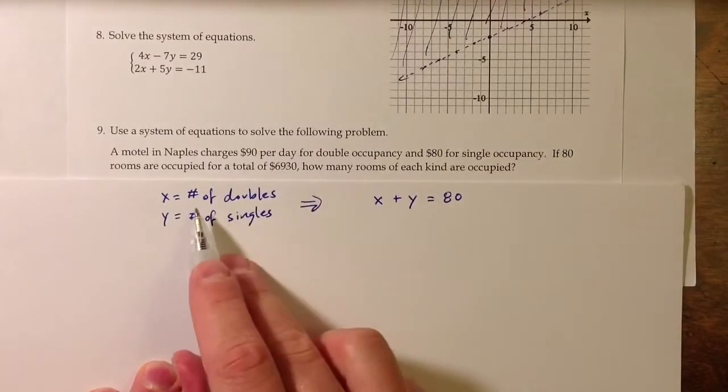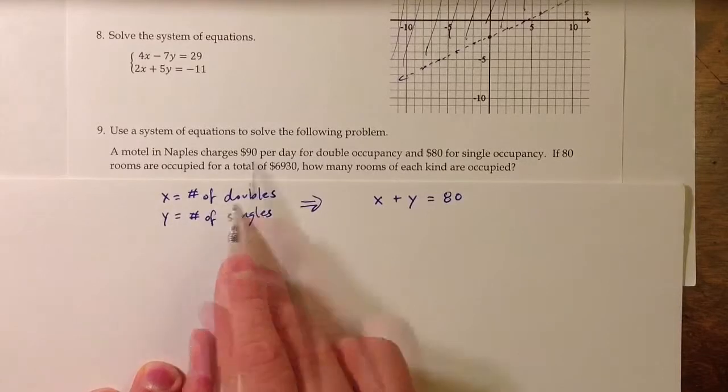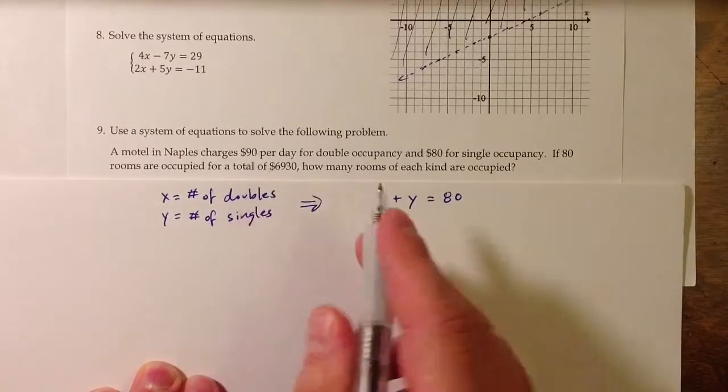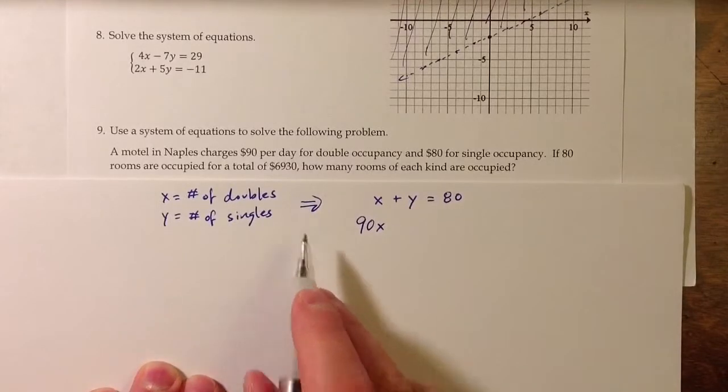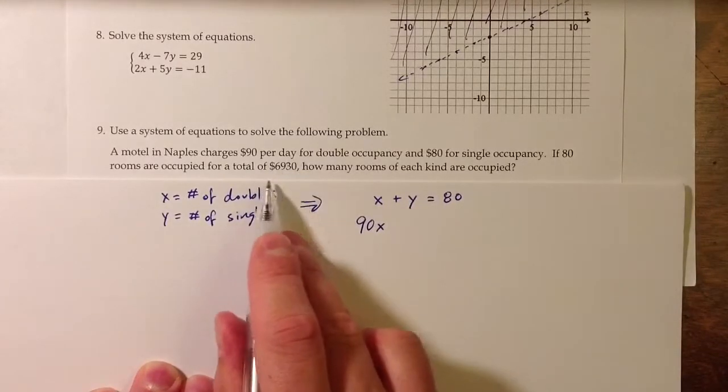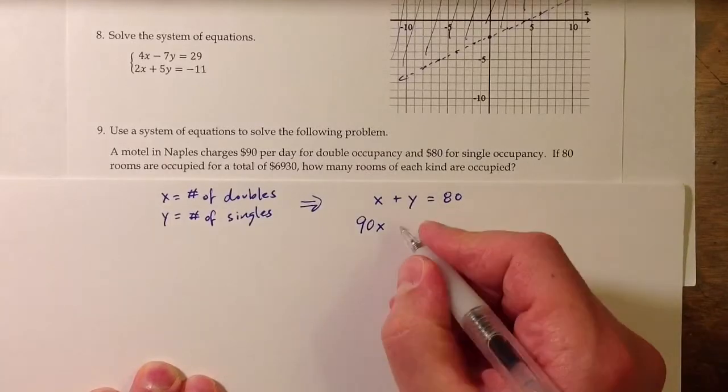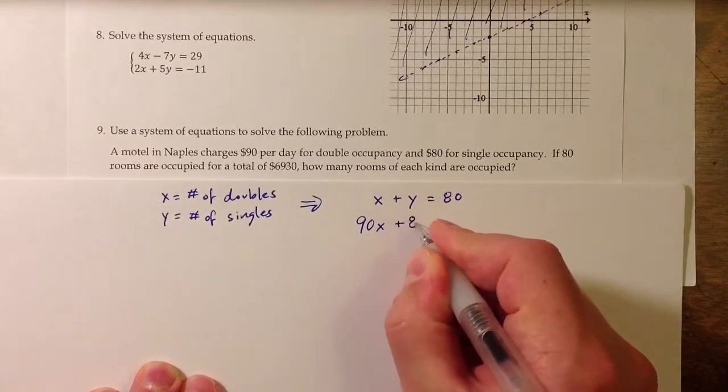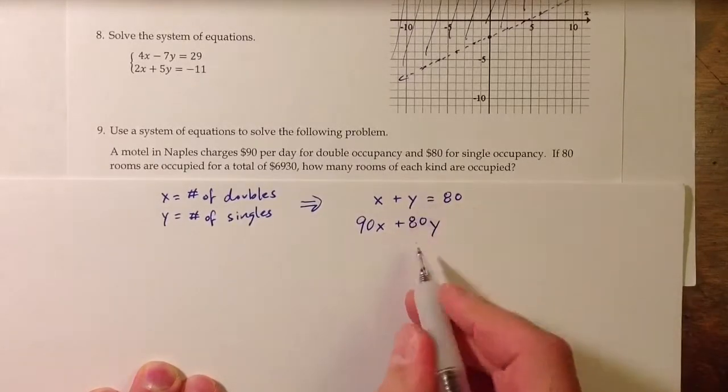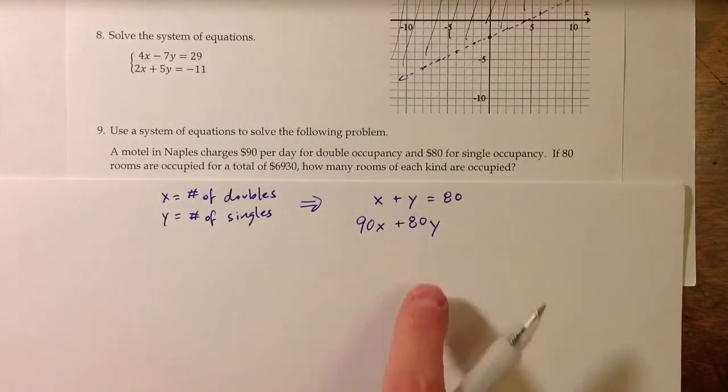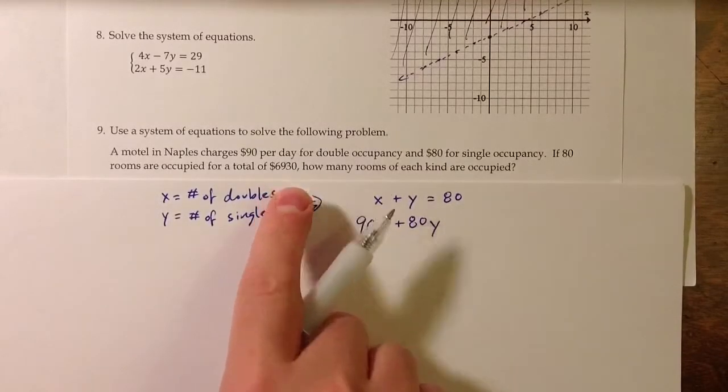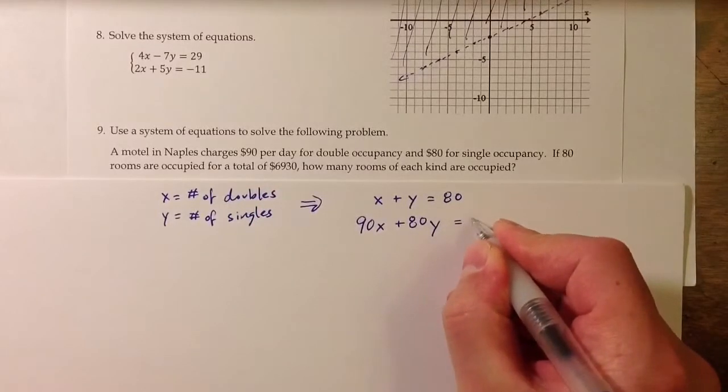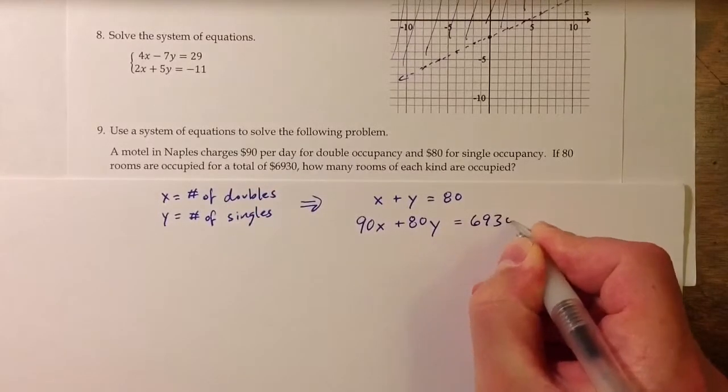Because I know that the double occupancy rooms bring in $90, I can multiply that number of rooms times 90, and that gives us the share of the total that comes from double occupancy rooms. Single occupancy rooms charge $80, and so 80 times y is the amount of revenue that comes from single occupancy rooms, and the total of those two is 6930.